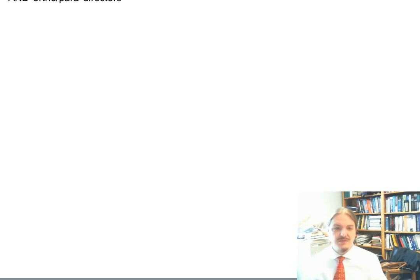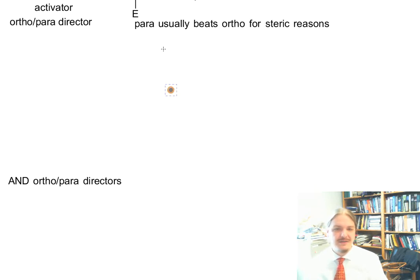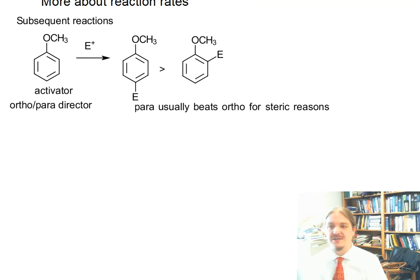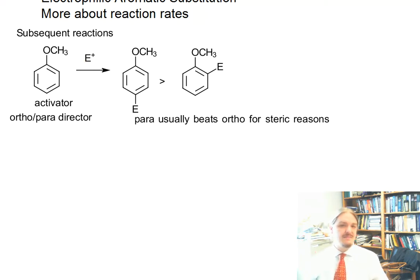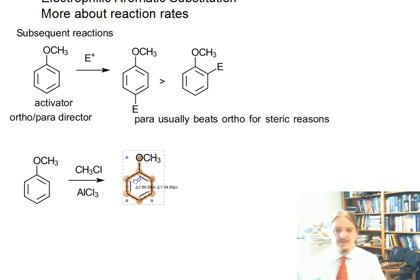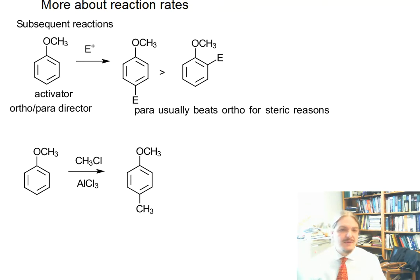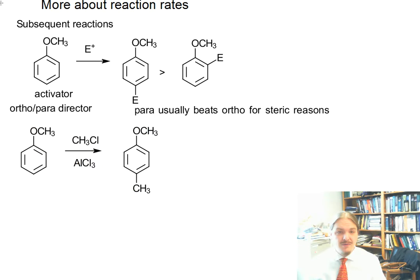But I'm going to talk about some specific electrophiles here and some trouble that can be caused. So we're going to consider doing a Friedel-Crafts alkylation here. And in this case, we're taking a ring that's activated. And even if we only consider the likelihood of the para product as the major product, we now have a ring with two activating groups.